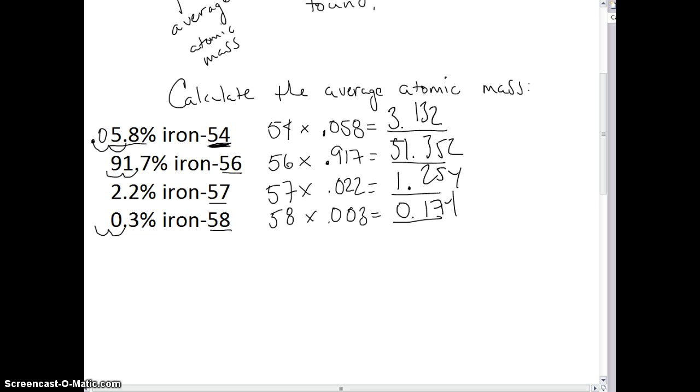So now I have four what we call weighted averages. And what we're going to take with these is we're going to just add all of them up together, and that will give me my average atomic mass. So I'm going to add 3.132 by 51.3. And I'm going to use all the decimals as well.